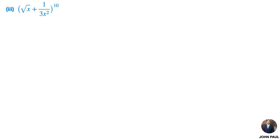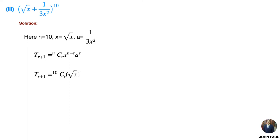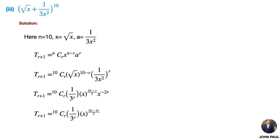Third problem: (√x + 1/3x²)¹⁰. Solution: here n = 10, x = √x, and a = 1/3x². Using the general term formula and substituting, we get x^((10−r)/2). Since √x = x^(1/2), that 1/2 is written in the power. Grouping the power of x gives (10 − 5r)/2.